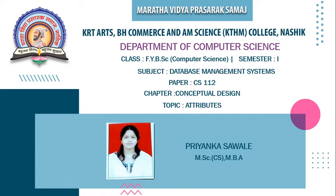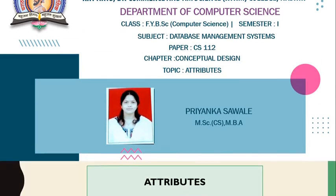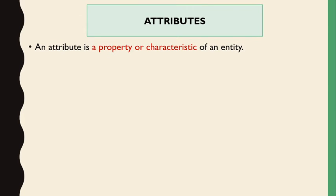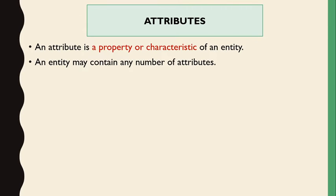Hello students, today we discuss the second chapter — attributes. In a previous lecture we discussed entities, types of entities, and the difference between strong entities and weak entities. Now we discuss attributes. Attributes are nothing but the properties or characteristics of an entity. An entity may contain any number of attributes, which describe it, and these attributes have their own properties.